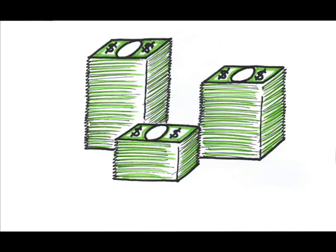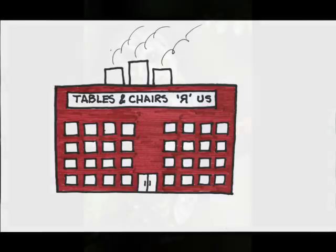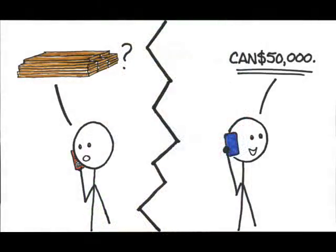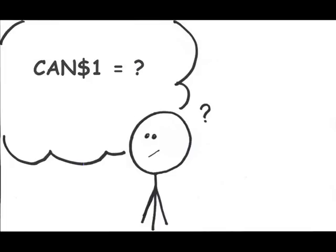Why would a country want to manipulate its own currency value? Suppose you're a US furniture producer, and government protection for the spotted owl means you can't get the lumber you need domestically. So you call up a Canadian lumber mill, tell them you'd like to place an order, and they tell you the lumber is going to cost 50,000 Canadian dollars. My bank account doesn't have any Canadian dollars in it. This is where the exchange rate comes in. If I can figure out how much one Canadian dollar costs, then I can calculate how much 50,000 Canadian dollars will cost.